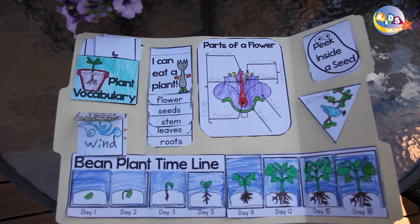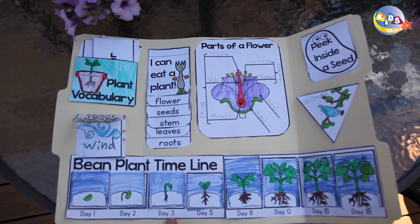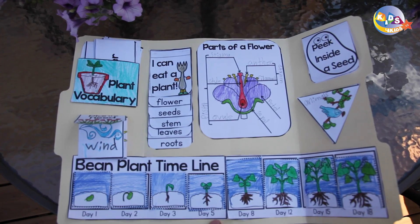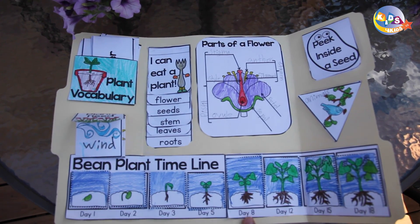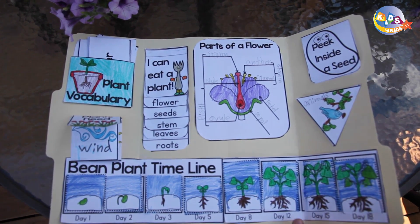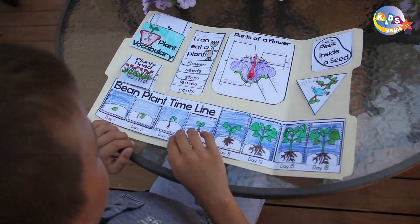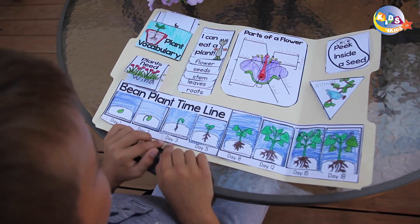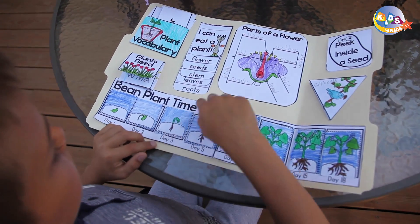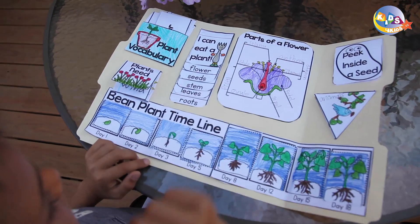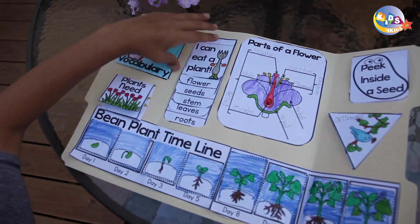Day 1, Day 2, Day 3, Day 5, Day 8, Day 12, Day 15, and Day 18. Above Day 3 is the 'I can eat a plant' section.